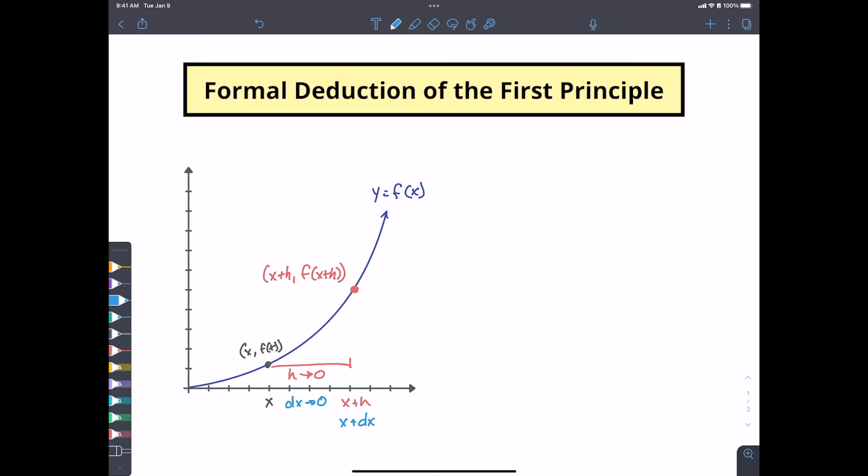So this idea of the derivative comes from our slope equation where we have y2 minus y1 over x2 minus x1, which we also call our delta y over our delta x, our change in y over our change in x.